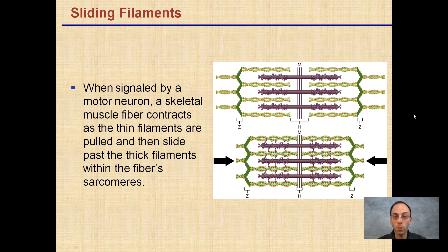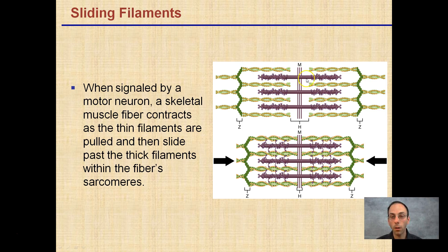When signaled by a motor neuron — and we're looking at motor neurons controlling skeletal muscles — the muscle fiber contracts as the thin filaments are pulled and slide past the thick filaments within the fiber's sarcomere. In the relaxed phase the distance is greater, but our green actin molecules slide against our thicker purple myosin molecules, which is why we see the arrows pointing inward during the contracting phase.